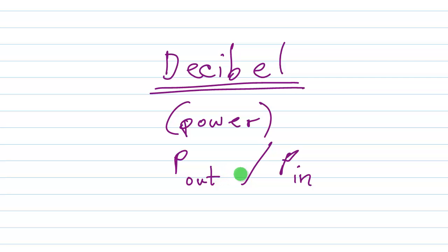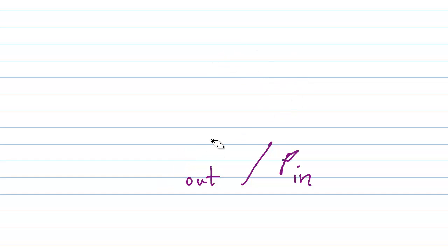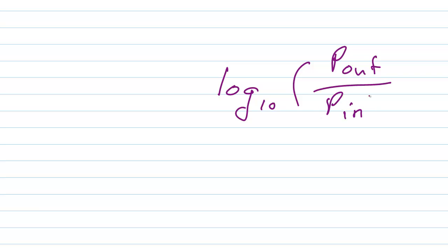Now if you take the logarithm—the base ten logarithm—of this quantity P_out over P_in, you're going to get some interesting numbers. If P_out is, say, ten times P_in, then the logarithm is going to be the logarithm of 10, which equals one. If P_out and P_in are the same, then you get a ratio of one, and the logarithm of one is zero.